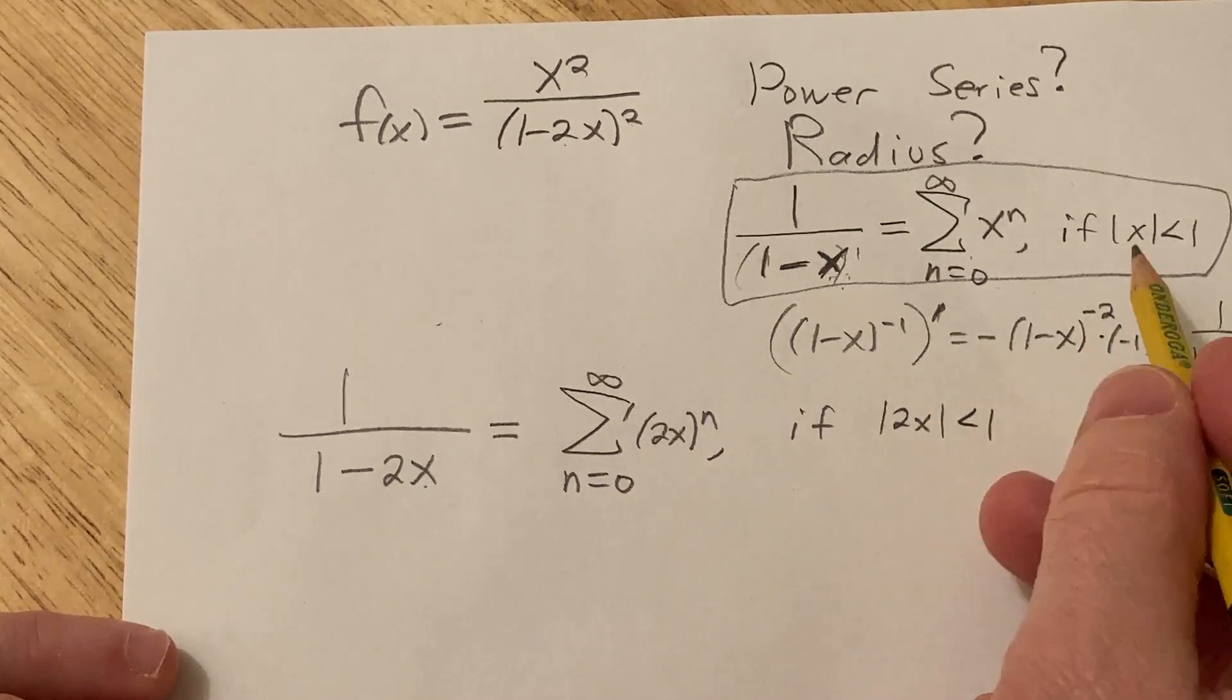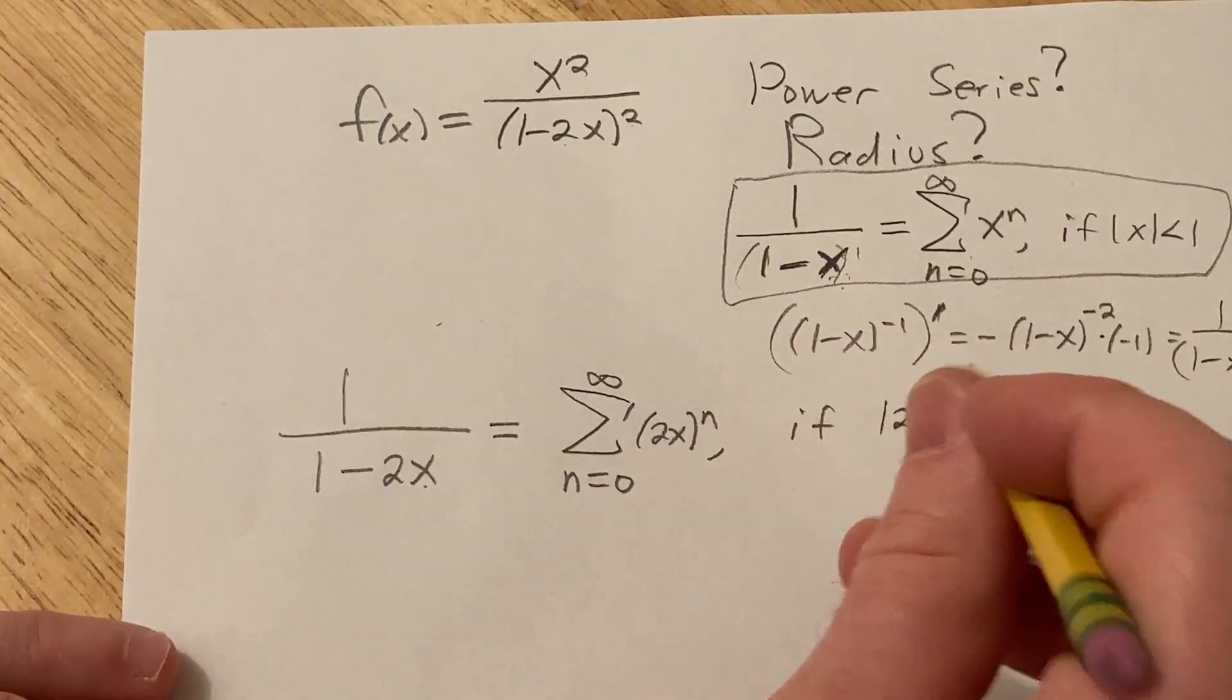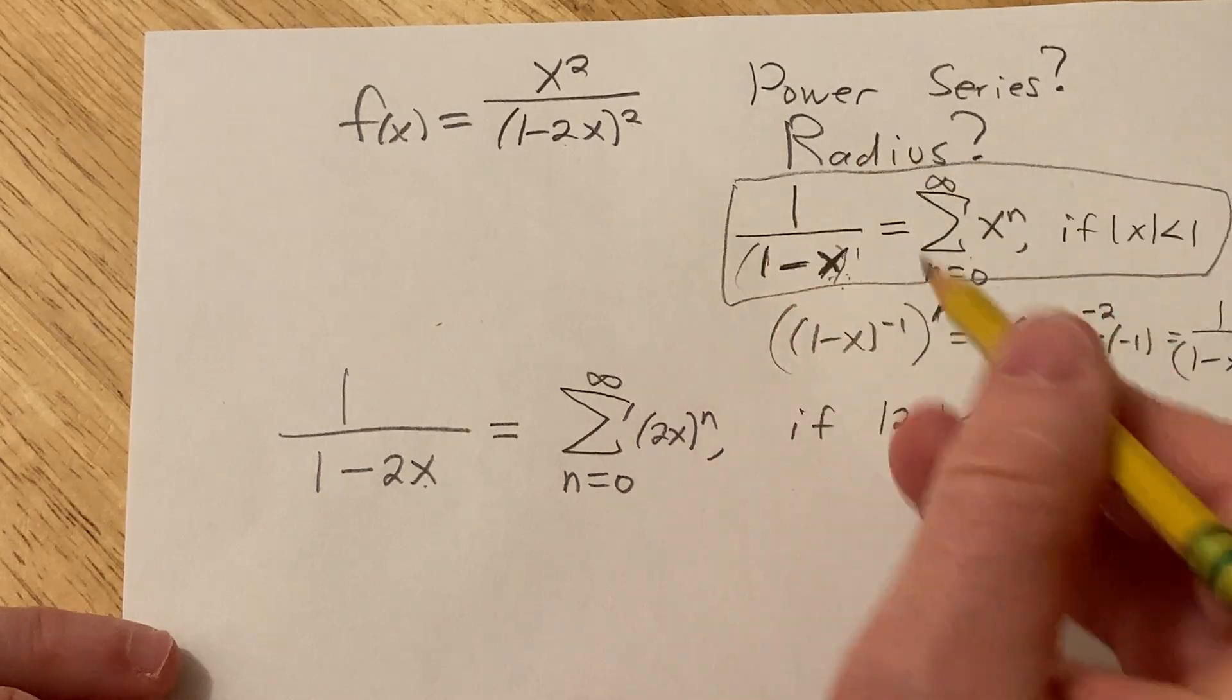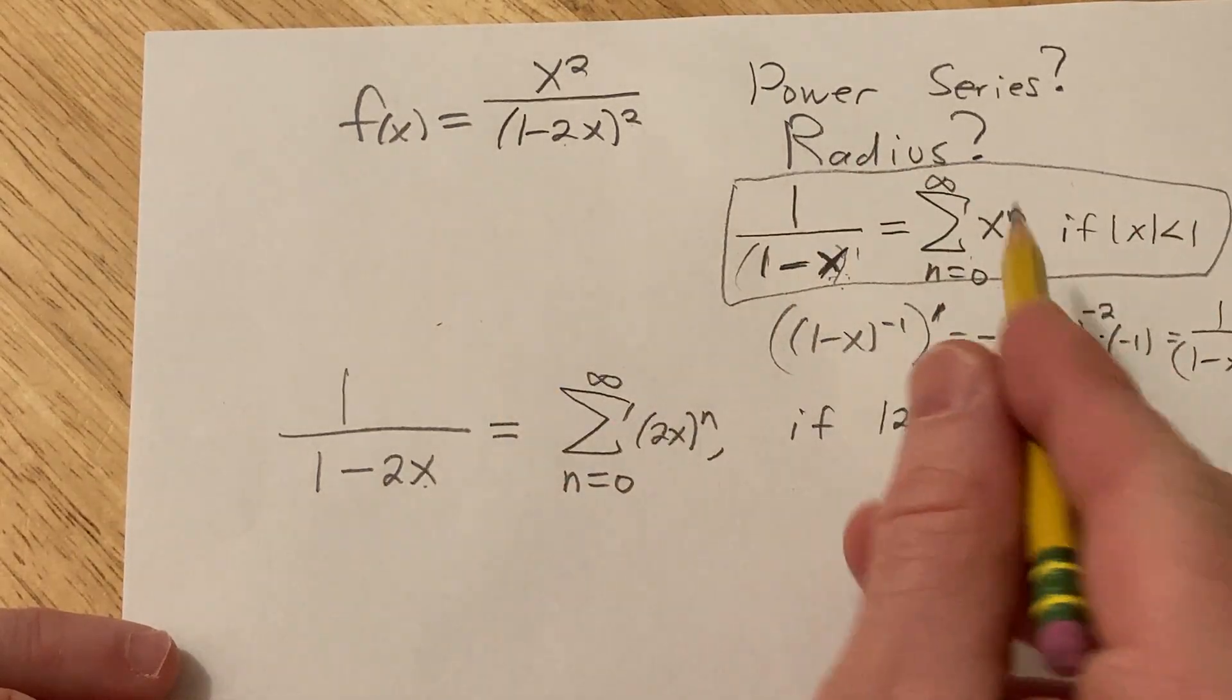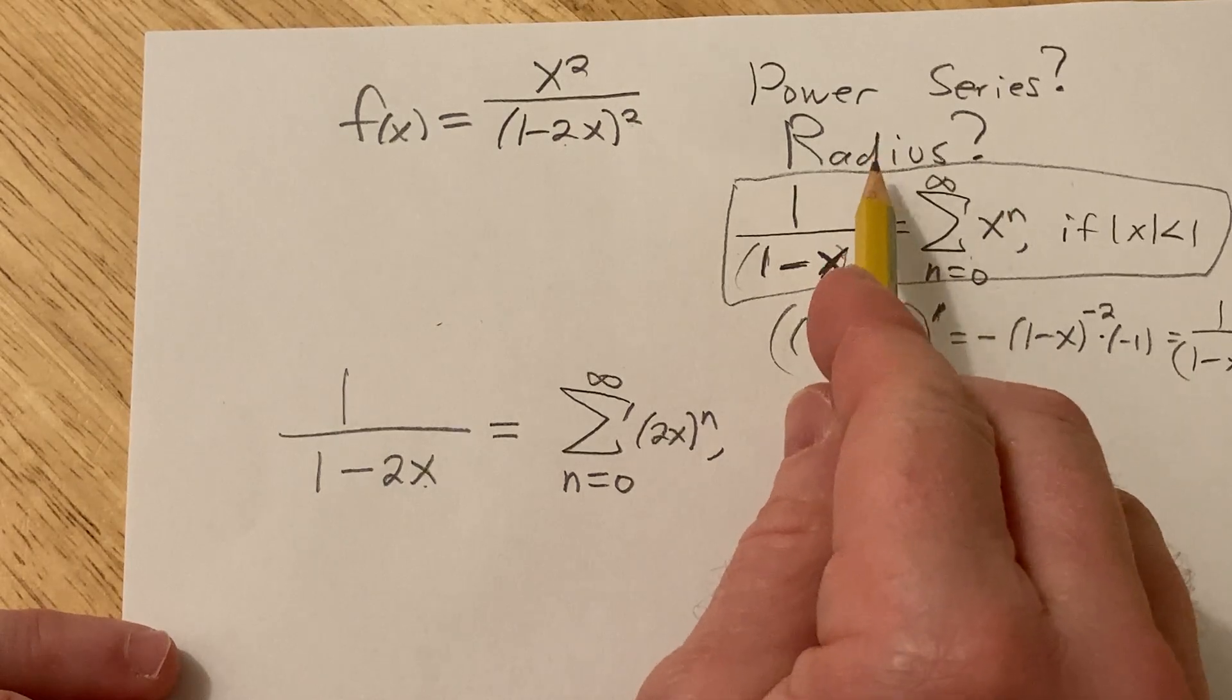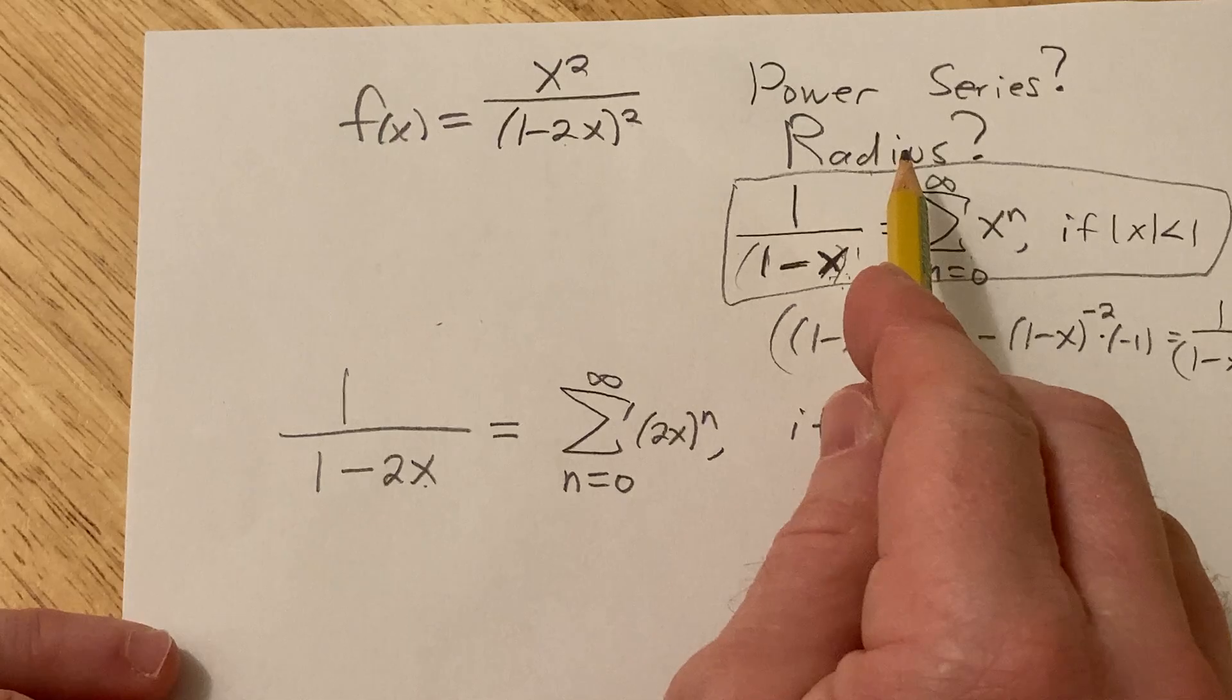And this is valid if the absolute value of 2x is less than 1. That's the same thing we did here, except here we have x. Here we have 2x. I'm going to take this moment to go ahead and find the radius, because it doesn't matter how many times we differentiate or integrate a power series, the radius of convergence does not change.